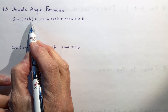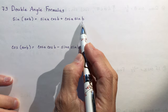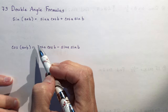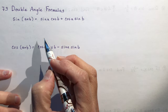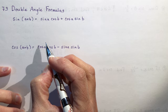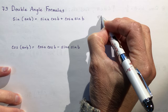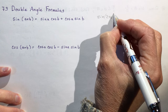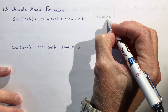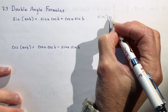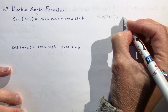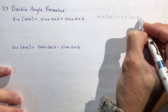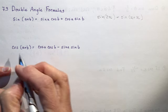The sine of A plus B is sine A cos B plus cos A sine B — remember, sine, cos, cosine, same sign as with the sine. Now, if we wanted to find the sine of 2x, that would be a horizontal compression by a half, so the period would change from 2π to π. This is the same as writing the sine of x plus x.